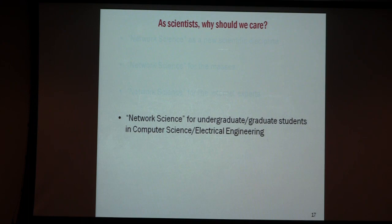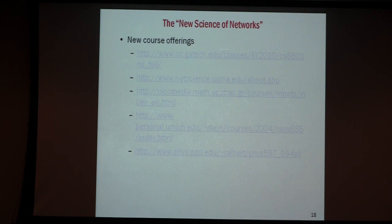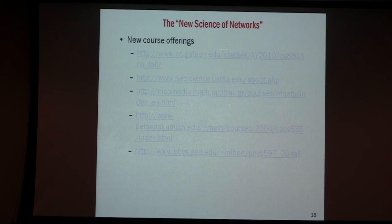This topic area has also started to incorporate a great deal of education. Georgia Tech offers a course in network science in computer science. The military is involved. Michigan has courses. Places where these new network science centers exist, you will find these courses, and many of them are offered in engineering.